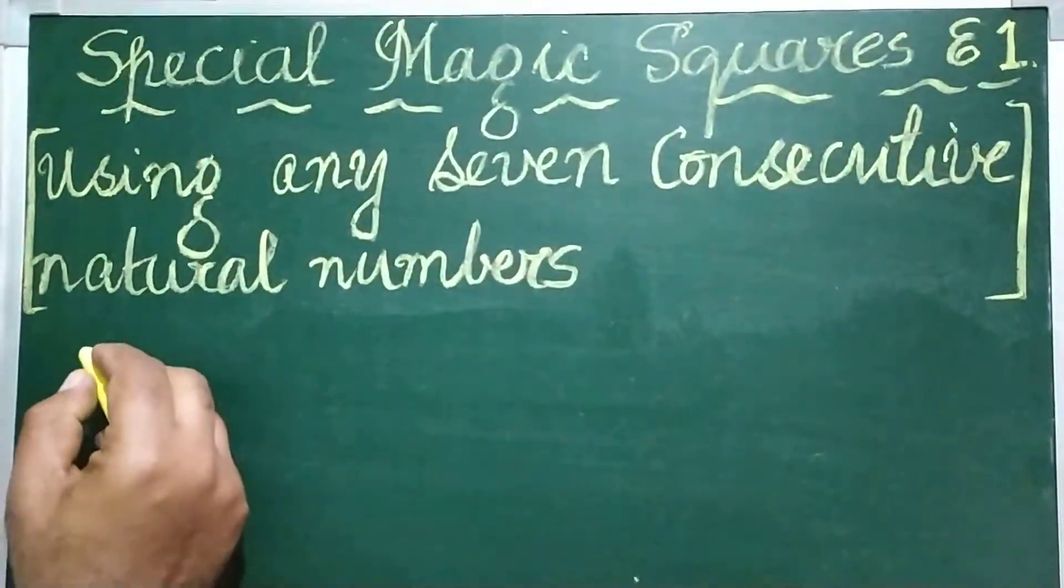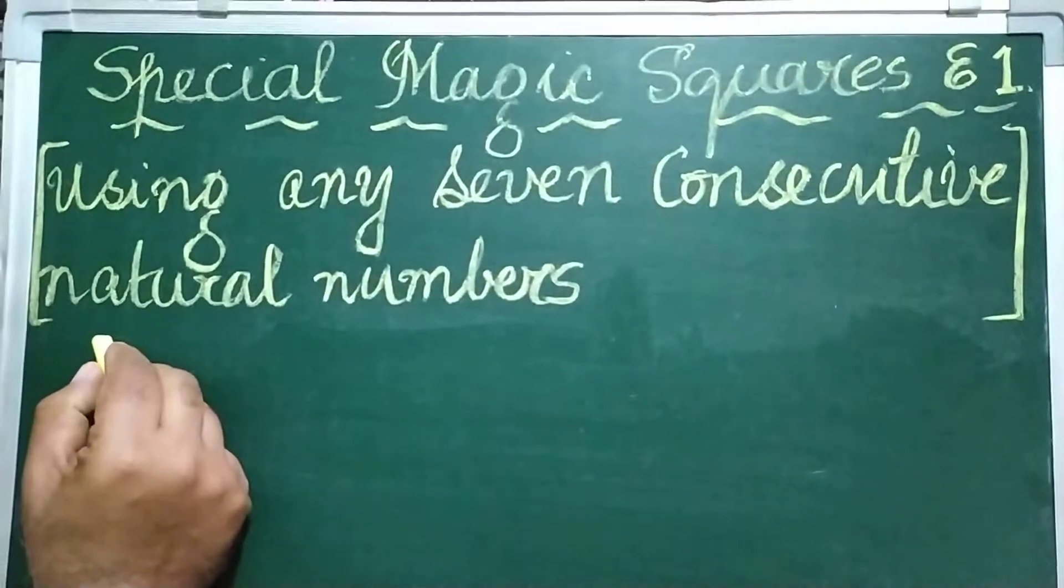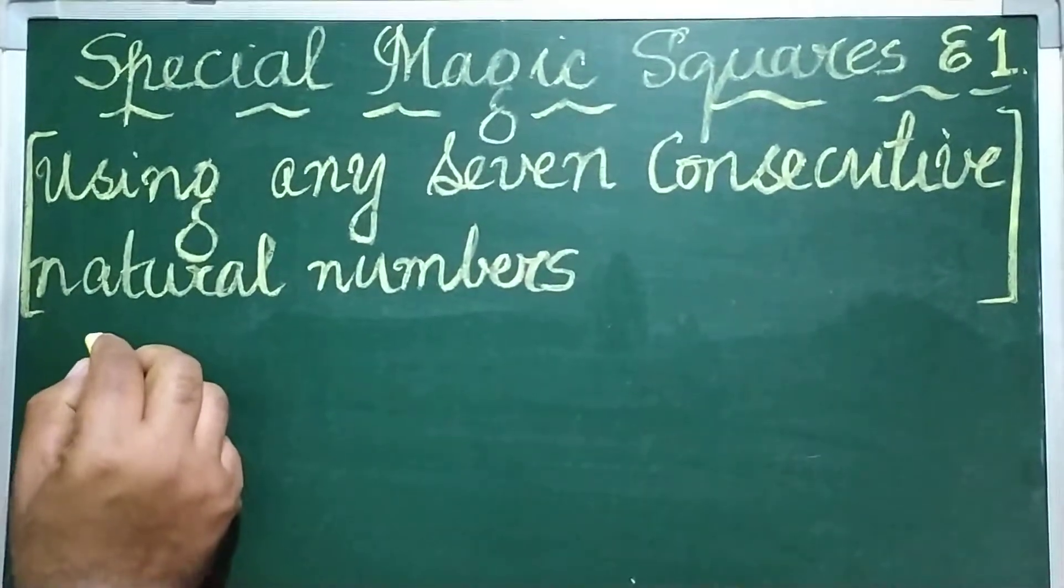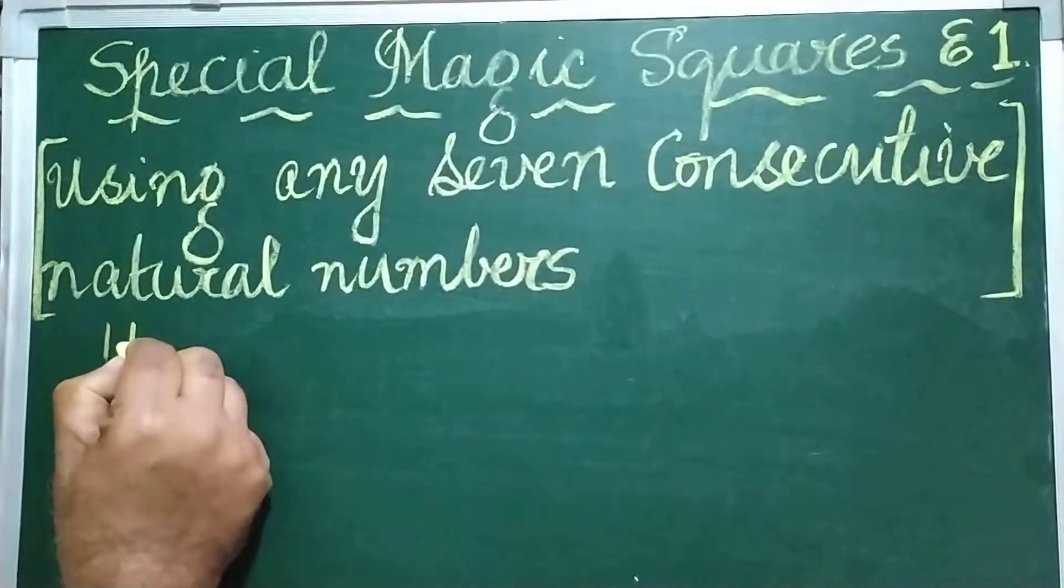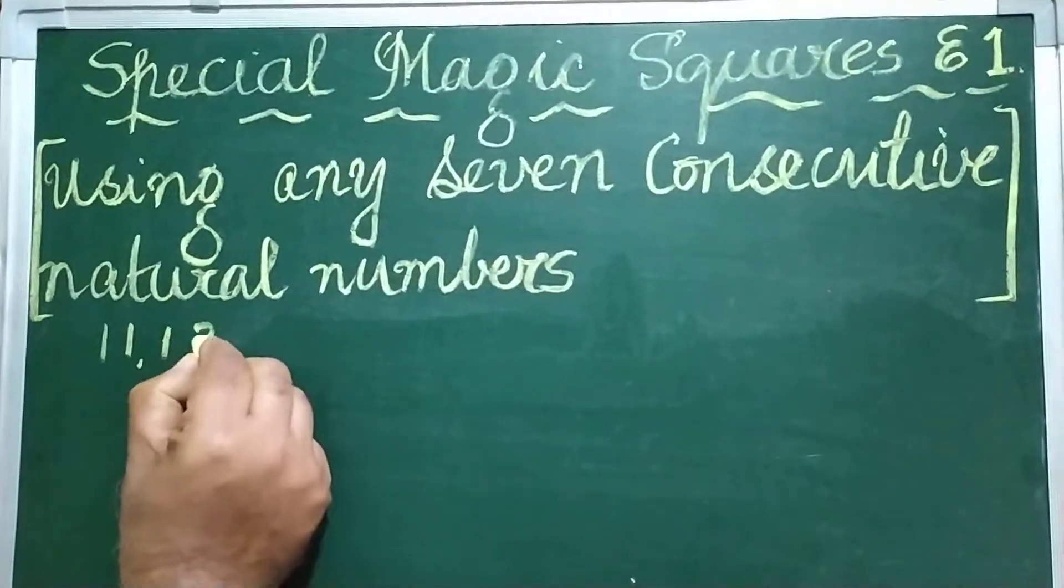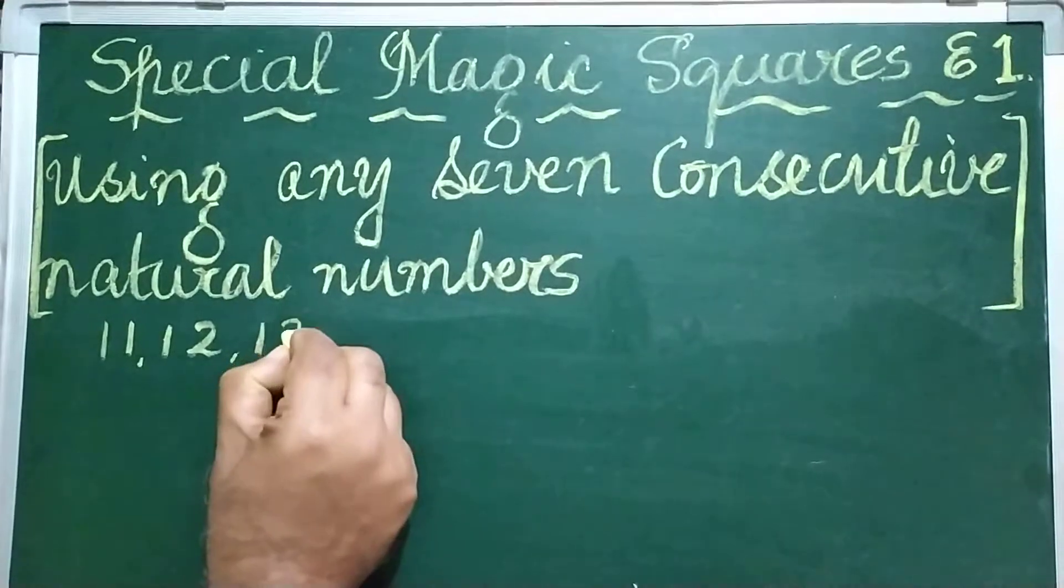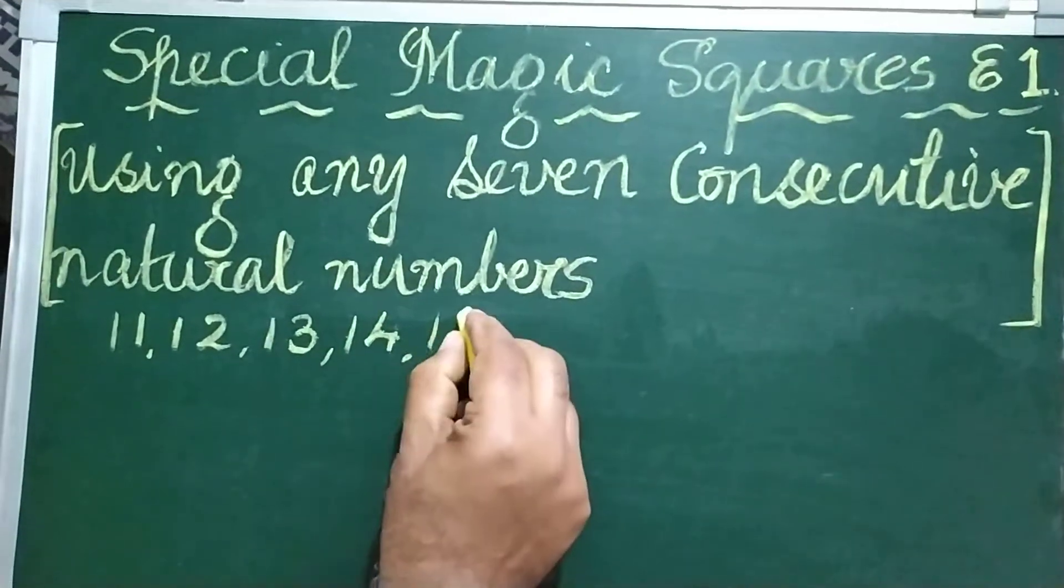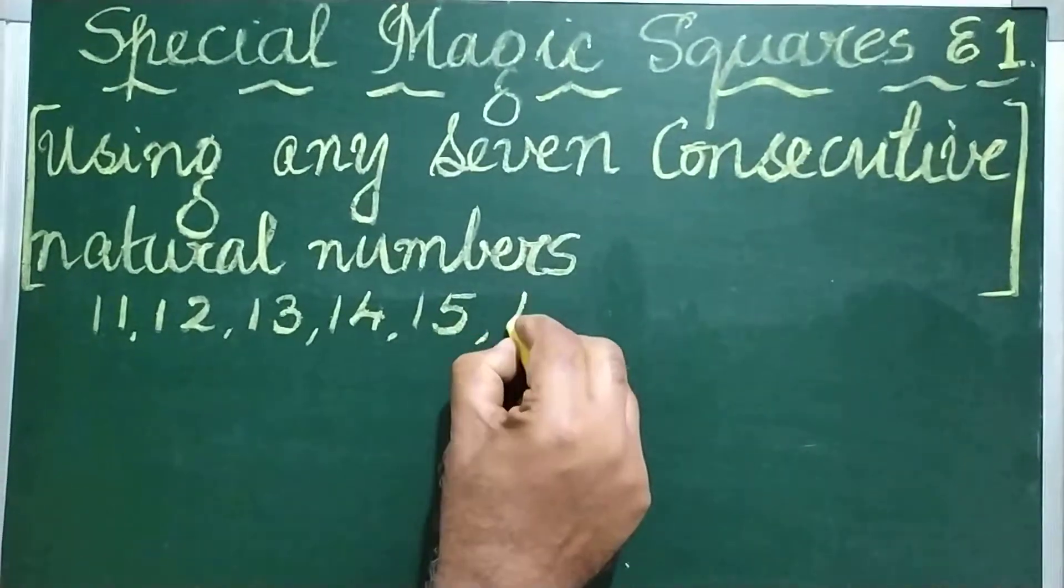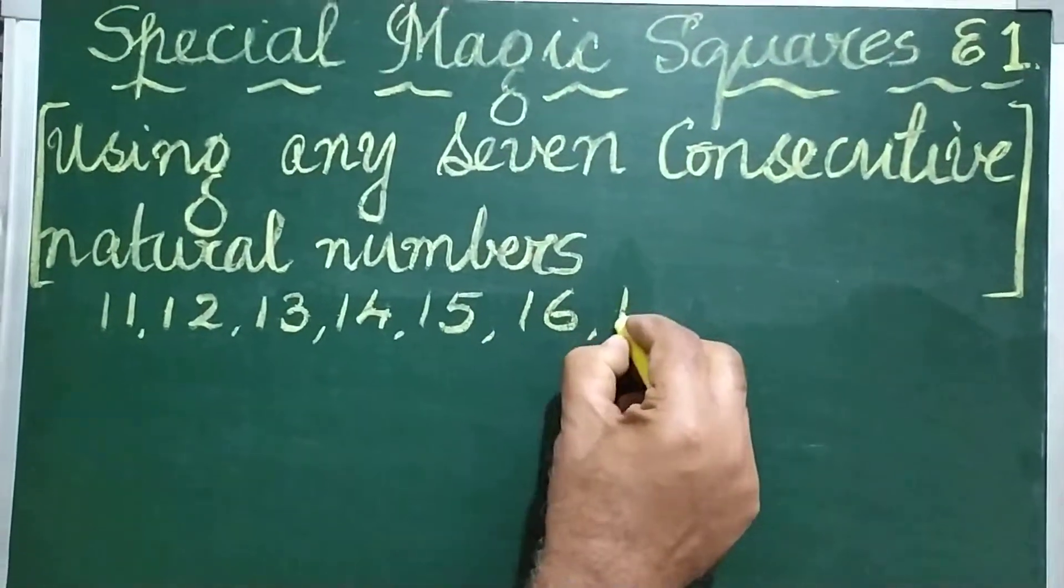The numbers that I have chosen for today's special magic square are 11, 12, 13, 14, 15, 16 and 17.